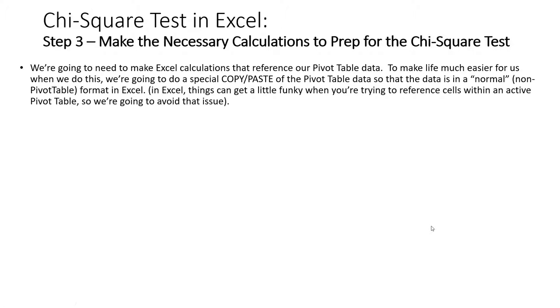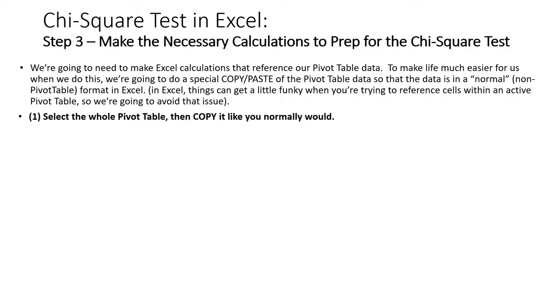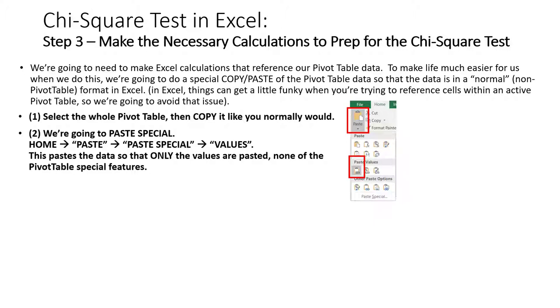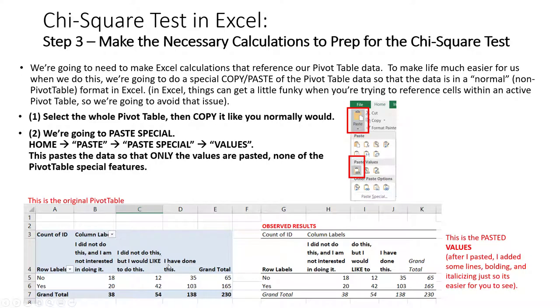Let's set up the statistical test with some necessary calculations. First, we're going to take the data in our pivot table and copy and paste it into a new spot in our Excel spreadsheet. The reason we do this is that interacting with a pivot table from outside functions in Excel can be a little problematic. By pasting the raw values in a different spot, it'll be easier to work with. We'll paste the values over, clean it up, and from there proceed to create our calculations for the expected values.